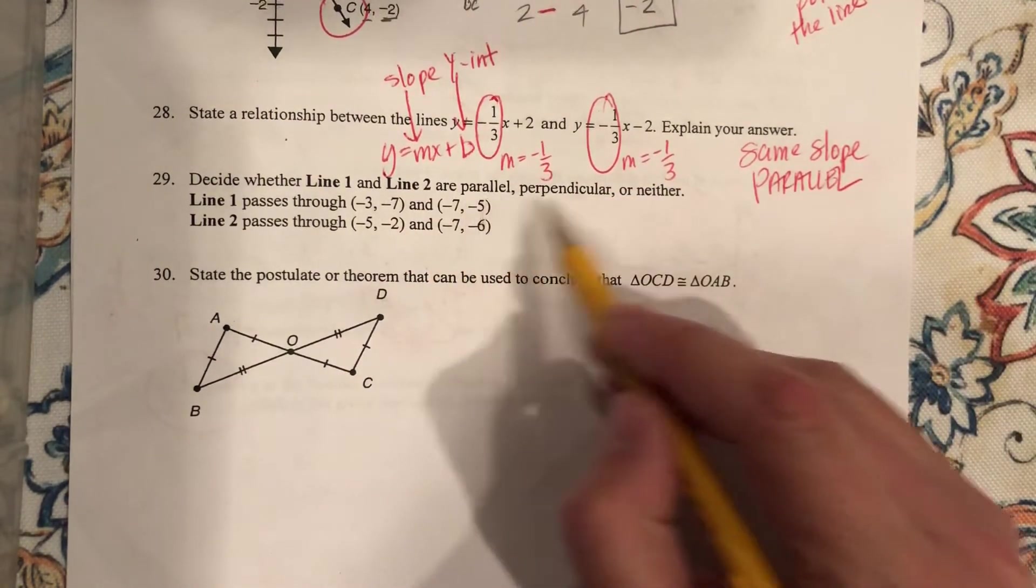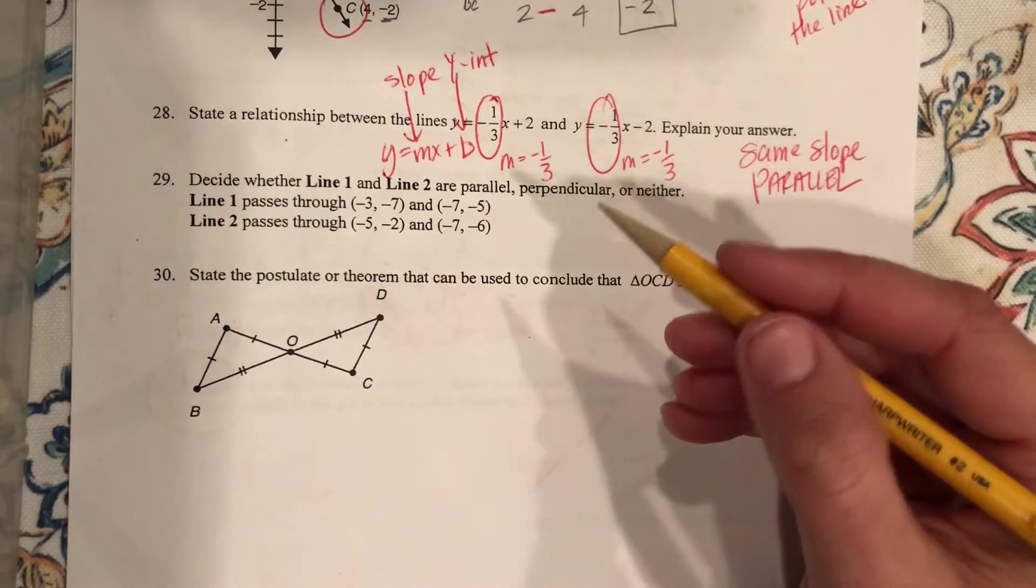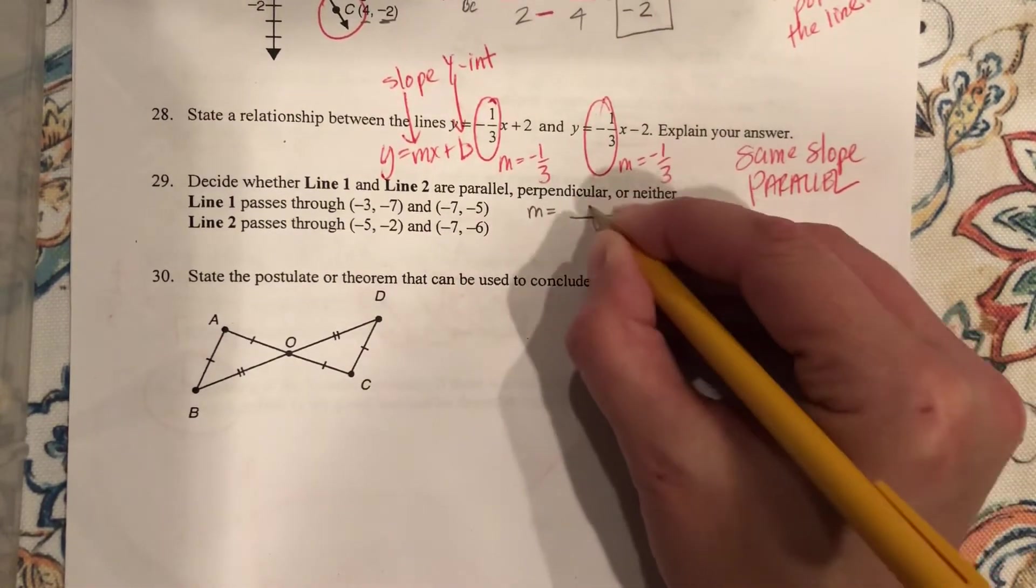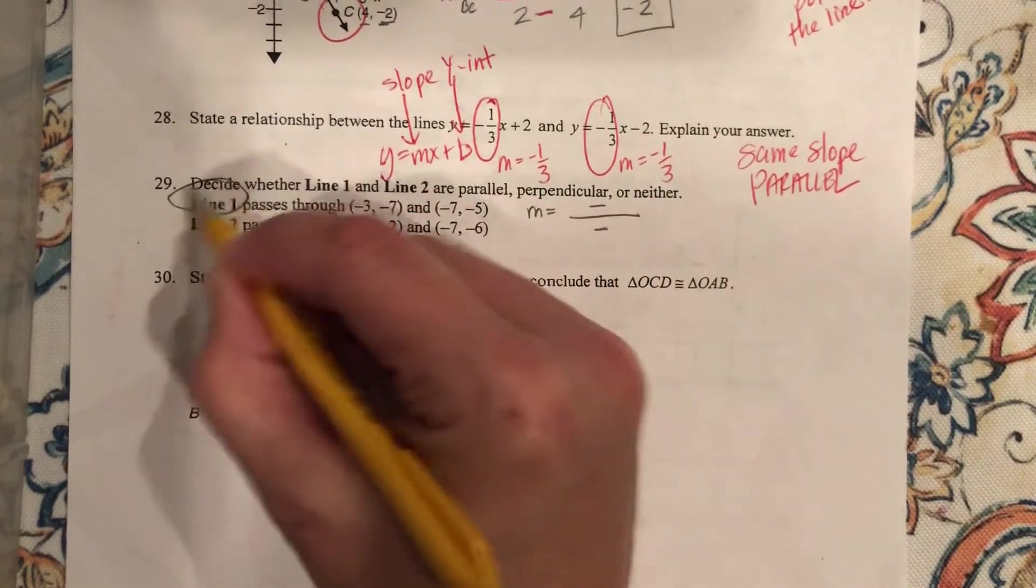Decide line 1 and line 2 are parallel, perpendicular, or neither. Okay. Well, first of all, we've got to find some slopes. So here's my slope formula for the first one, my handy-dandy slope formula. So let's look at line 1.